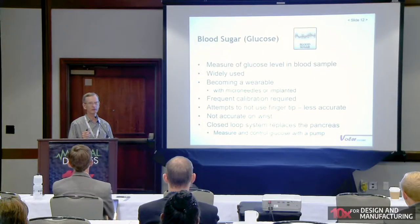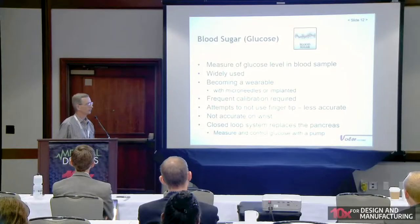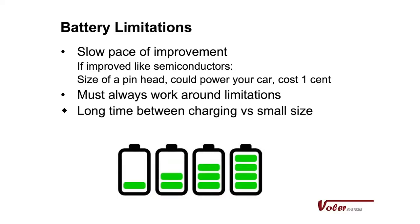Glucose measurement is another common one. Today we have wearable patches with micro needles — they don't feel like needles, they just go through the skin enough to pick up a glucose signal. They do require calibration; you have to prick your finger once or twice a day because they're not accurate over a long period of time. Also, you need very good blood perfusion where you're measuring, so the wrist is not a good place. The most common place people want a wearable device — the wrist — is probably the worst place to put it. We now have sensors combined with insulin pumps, making a wearable pancreas even for type 1 diabetes.